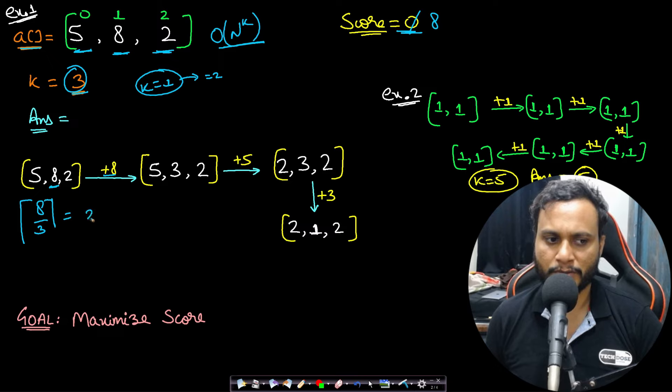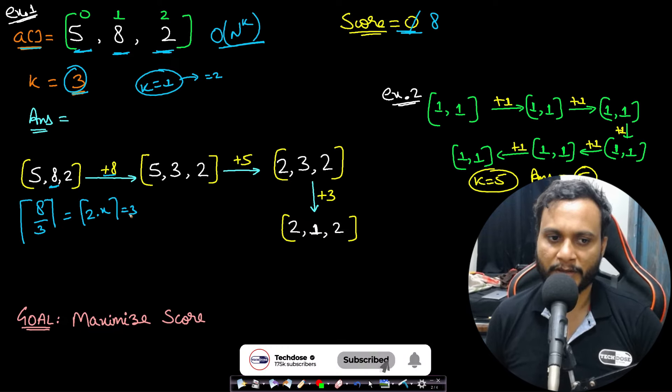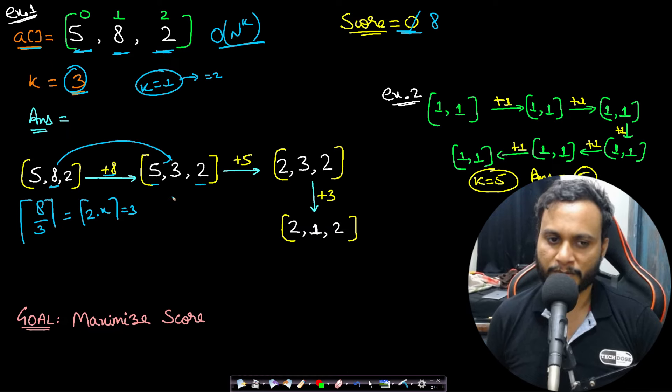This will be 2 point something, so 2.x. If you take the ceiling of it, if x is not equals to 0, then this will become 3. That is why this 8 became 3 here and rest of the values will not be touched.